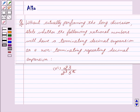I am Alka and we are going to discuss without actually performing the long division, state whether the following rational numbers will have a terminating decimal expansion or a non-terminating repeating decimal expansion. Our question is 23 upon 2 to the power 3 and 5 to the power 2.